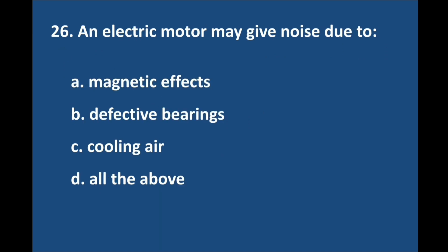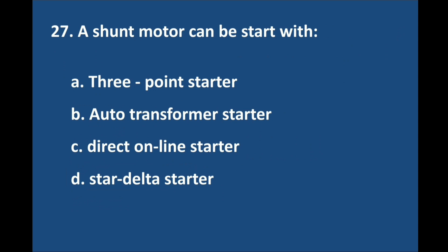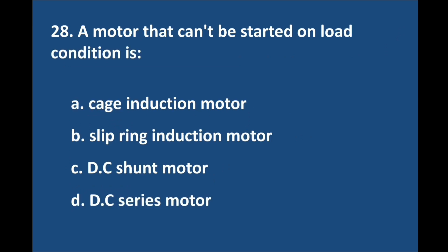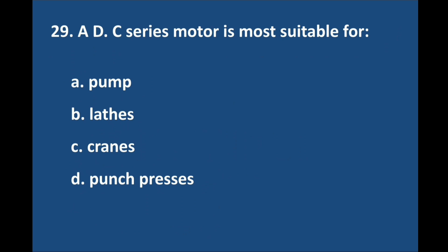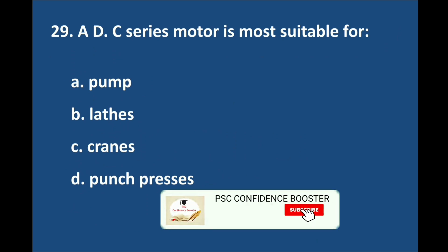Question number 26. An electric motor may give noise due to — answer is option D: All the above. Question number 27. A shunt motor can be started with — answer is option A: 3-point starter. Question number 28. A motor that can't be started on no-load condition is — answer is option D: DC series motor.